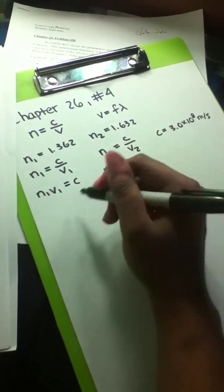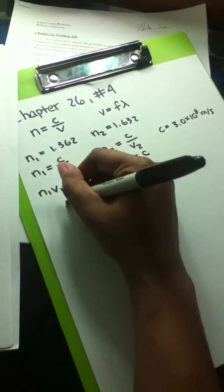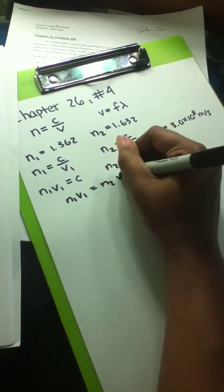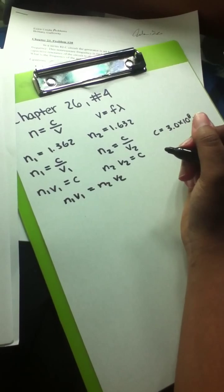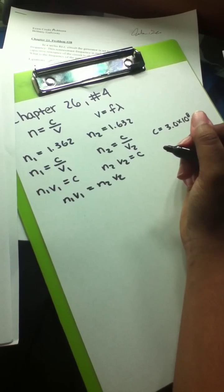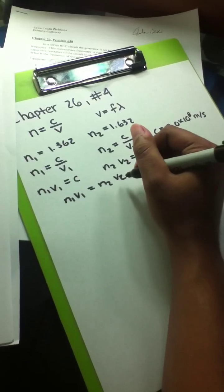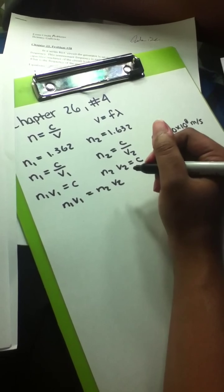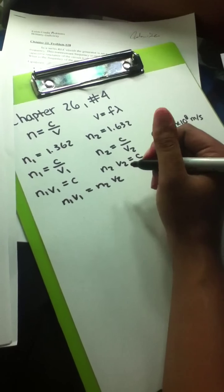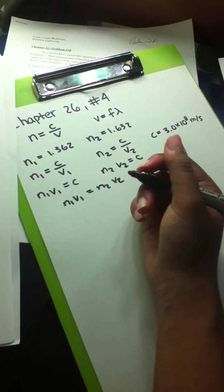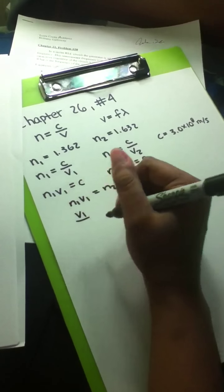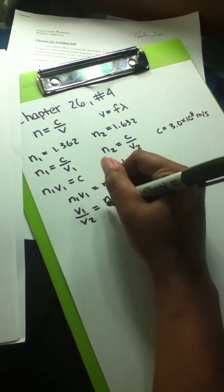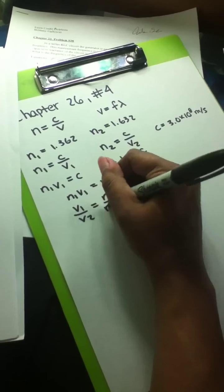We can set the two equations equal to one another, then divide both sides by V2 and by N1. This gives us V1 over V2 is equal to N2 over N1.